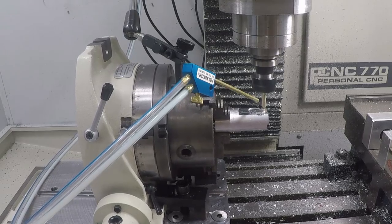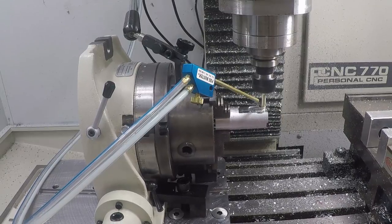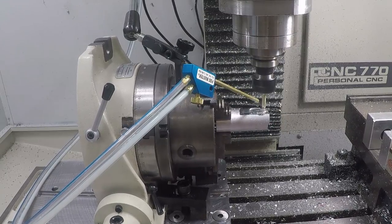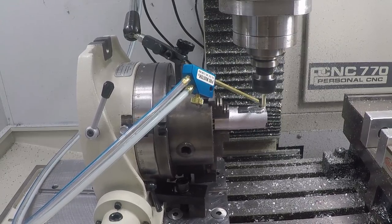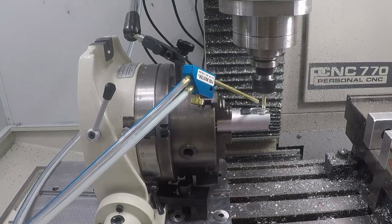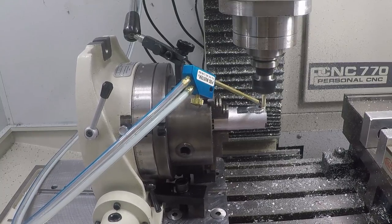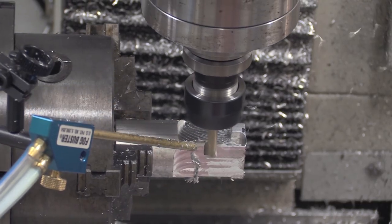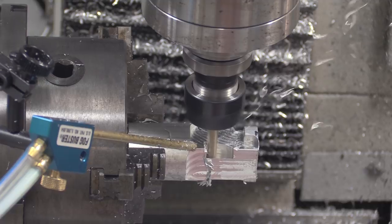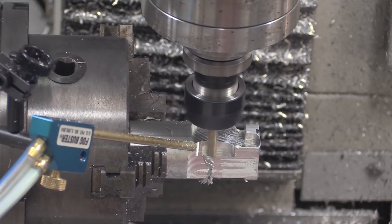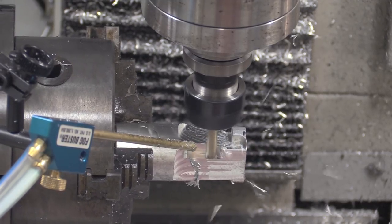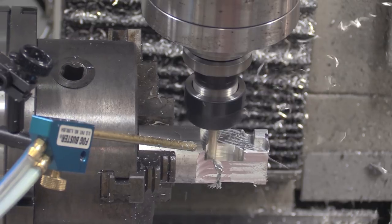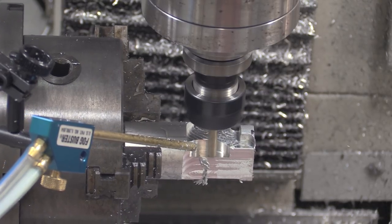I do have a tailstock that I could use to support the end of the piece, but it's fairly large and it wouldn't fit in that space between the fourth axis and the vise. And since I'm going to be using the vise extensively in this project, I didn't want to keep removing it and replacing it. But even with the compromises I chose to make, you can see that I'm getting some pretty decent material removal rates and forming some nice chips.